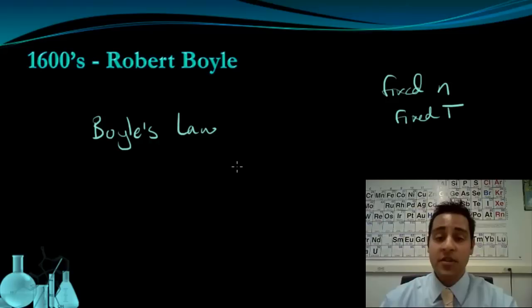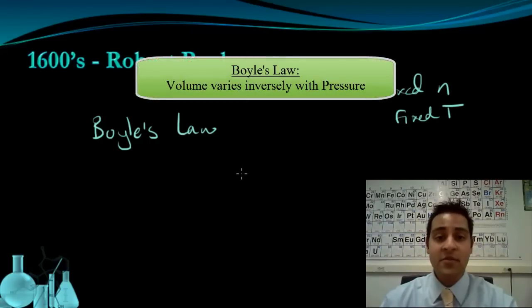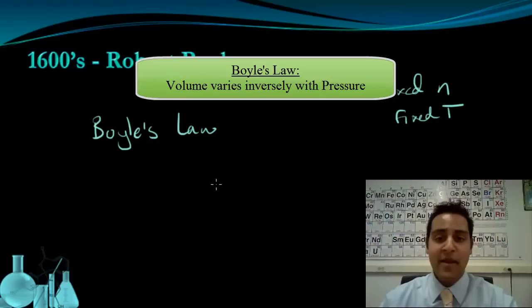So Boyle's Law basically says that volume varies inversely with pressure. And mathematically, what that looks like is volume V varies—this sign means varies—with the inverse of pressure.